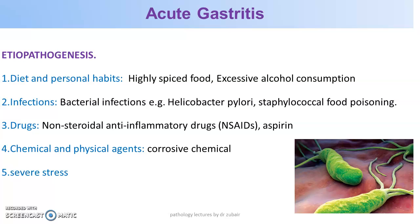The etiology of acute gastritis includes diet and personal habits such as highly spiced food and excessive alcohol consumption — spicy food is always linked to gastritis. Infections are also important; bacterial infections like Helicobacter pylori are a key causative agent, and the discovery of H. pylori led to a Nobel Prize for medicine.